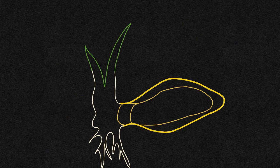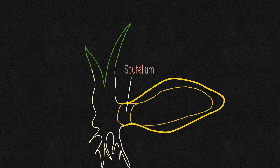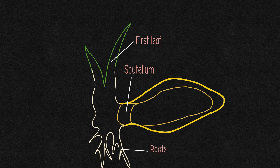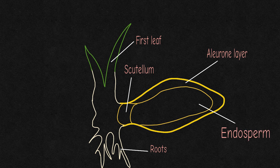Inside the seed, there is the scutellum, which absorbs nutrition from the endosperm, the first leaf, the roots, the aleurone layer that synthesizes enzymes, and the endosperm, which is the food storage of the seed.